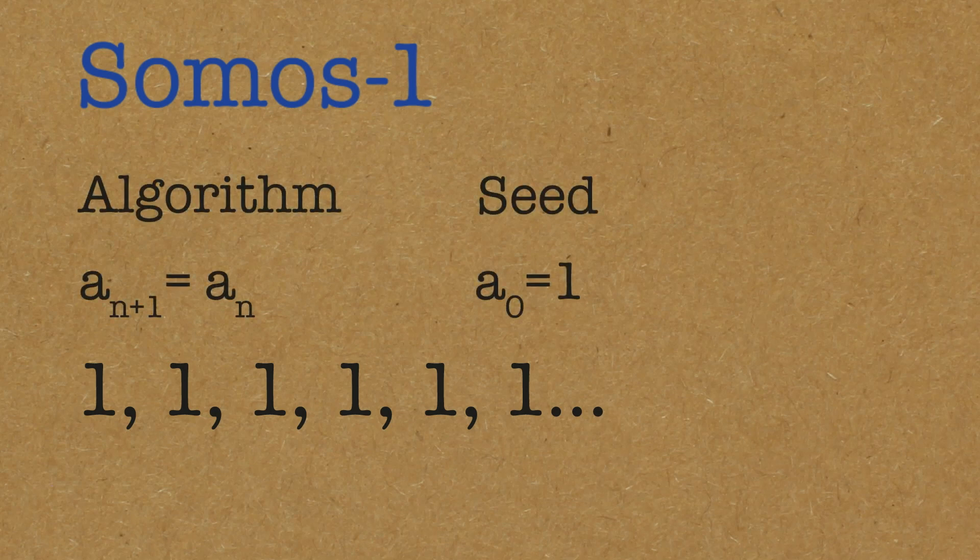If you start from Somos 1, it's just a string of ones. You can predict that the algorithm is simply a_{n+1} = a_n, then equals 1. It's very, very simple. Nothing magical is happening here — it's very uninteresting.